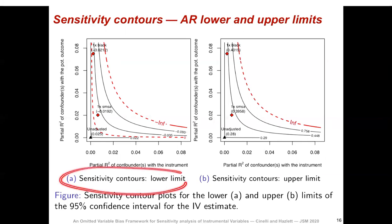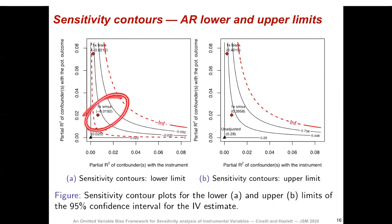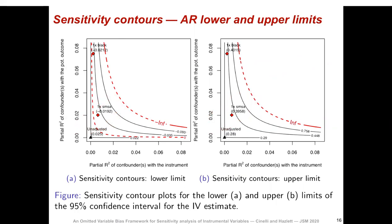The sensitivity contour of the lower limit of the confidence interval has the partial R-squared of the confounder with the instrument on the x-axis and the partial R-squared with the potential outcome on the y-axis. The original lower limit is 2.5%. As we move in the direction of stronger confounding, the lower limit eventually reaches zero or becomes unbounded. Red diamonds provide bounds for confounding as strong as SMSA or as strong as a race indicator. These plots tell us that if we cannot rule out confounding as strong as SMSA, then we cannot rule out anything between minus 2% and 40% for the causal effect of interest — which is pretty uninformative.